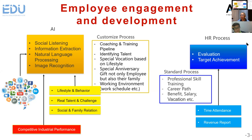In this function, we provide social listening, information extraction, NLP, and image recognition. Then we can provide output as a customized process, like coaching and training online, and identify talent. For example, our staff may work in one function but have another talent that can work in another position and function. We also offer special vacation-based online style — someone may want to take a long vacation but not often, depending on lifestyle. And also we provide special anniversary gifts, not only for the employee but also for their family, collected through our data collection.